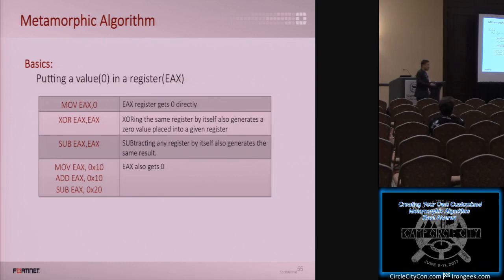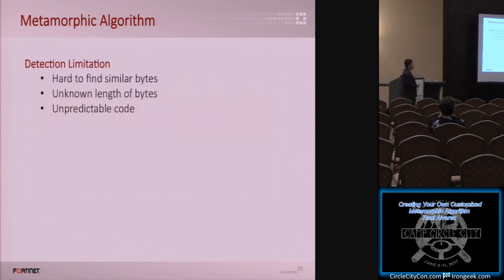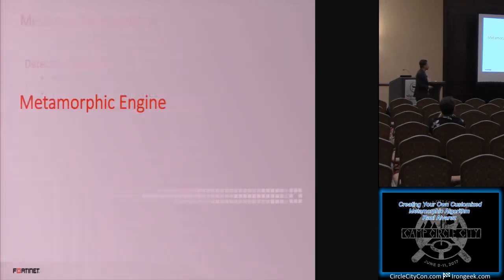With polymorphic, you cannot run the encrypted bytes directly because they are encrypted. But for metamorphic, you can run the actual code — but the code looks different compared to different samples. That is metamorphic. Most of the time it is hard to find similar bytes when doing detection. For BirLock, it uses different lengths of instructions just to generate four bytes differently.